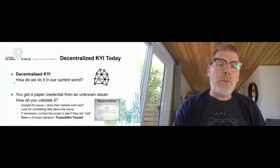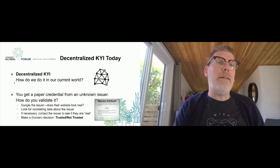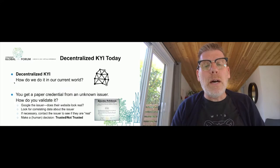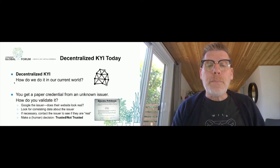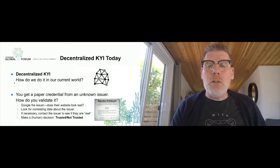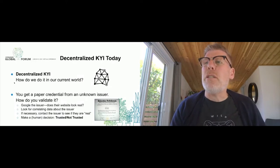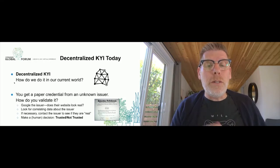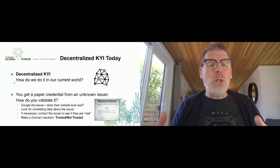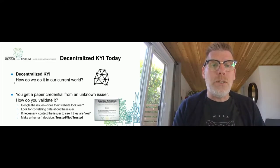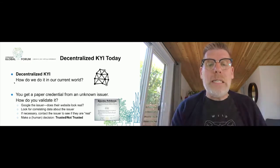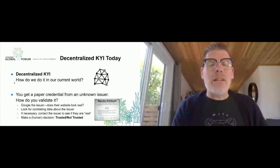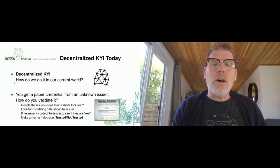We're going to focus on decentralized ways, not to say the other ways are bad. Today, if you've got a paper credential from an unknown issuer — like a diploma I've got on screen from the University of Suffolk, a law degree — you Google the issuer, figure out who they are, decide if their website looks real, look for correlating data. If it's important enough, you might contact the issuer directly. Ultimately a human decision is made: am I going to trust this or not?